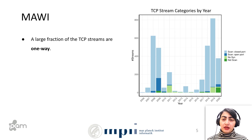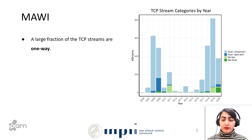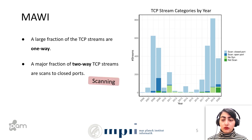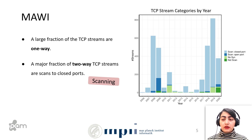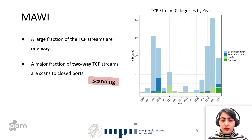The plot shows TCP stream categories by year, with number of streams on the Y axis and years on the X axis. The light blue bars are the most prominent, representing scans to closed ports — so a major fraction of two-way streams are scans to closed ports. The dark blue bars show scans to open ports also contributing to port 0 traffic in the Mavi dataset. Looking at 2008, 2009, and 2020, we see different fractions of port 0 traffic being scans to open ports.